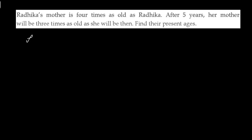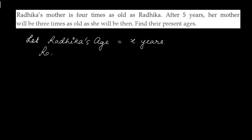So, let Radhika's age be equal to X years. Then, according to the condition given to us, Radhika's mother's age will be 4 times as old as Radhika. That means, it is equal to 4X years.